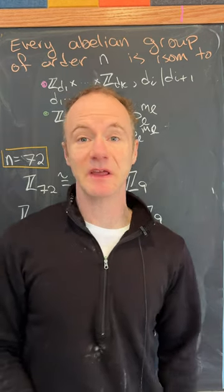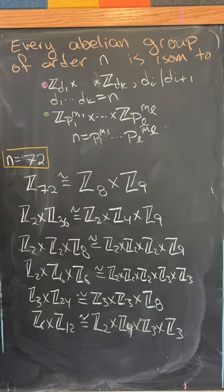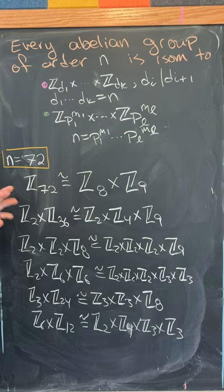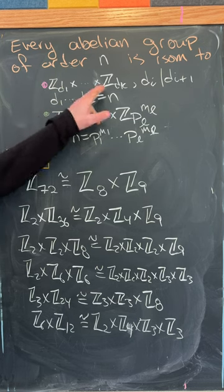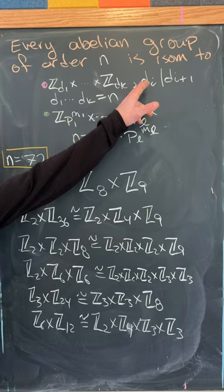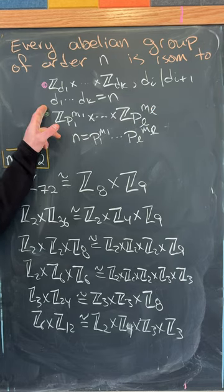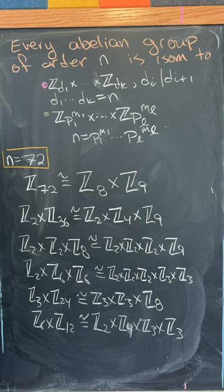So the Fundamental Theorem of Finite Abelian Groups says that every group of order n is isomorphic to Zd1 cross up to Zdk, where Di divides Di plus 1, where the product of the Ds is equal to n.